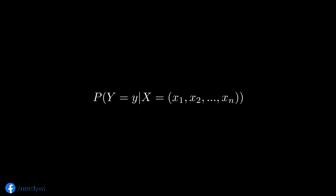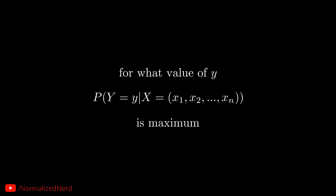To tackle this problem from a probabilistic view, we need to consider y and x as random variables. Let's assume that capital Y takes the value lowercase y, and capital X takes the values x1, x2, up to xn. To find the correct label, we need to find this expression for all possible values of y.